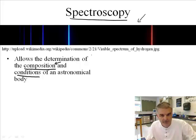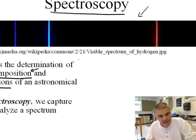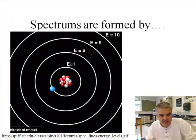In spectroscopy, we capture and analyze a spectrum. So, when we point a telescope at a particular astronomical body, we can analyze the spectrum of that. And spectroscopy assumes that every atom or molecule will have a unique spectral signature. We'll talk about that a little bit.